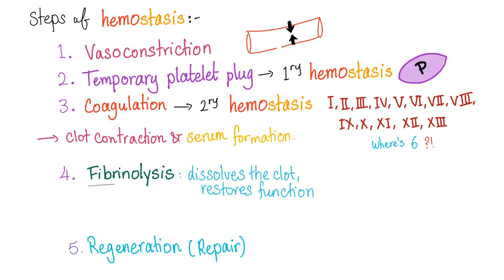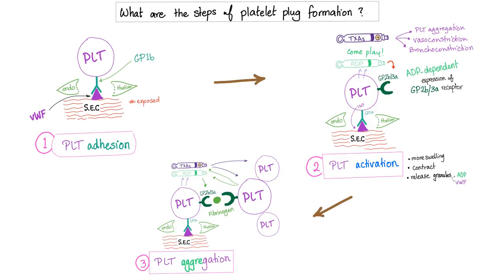Steps of hemostasis are numerous. We have vasoconstriction and temporary platelet plug — this is primary hemostasis. The coagulation cascade is secondary hemostasis, and then you have fibrolysis, and then regeneration and repair. These are the steps of primary hemostasis, or platelet plug formation, and we have discussed them before.